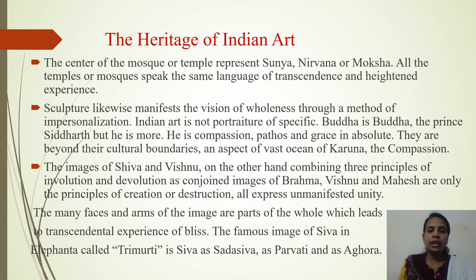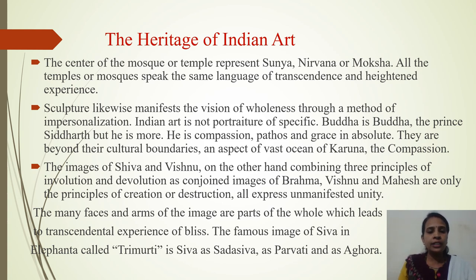The images of Shiva and Vishnu on the other hand, combining three principles of involution and devolution as conjoint images of Brahma, Vishnu and Mahesh. Toh Brahma, Vishnu and Mahesh, jisko hum Tri-murti ke naam se jante hain — 3 forms combined into one. Toh Brahma ko hum creator maante hain, Vishnu ko palankarta maante hain, Shiva the destroyer. All expresses unmanifested unity — lekin ye tino milakar phir se Ishwar ke ek hi hone ka bhaav pradarshit karte hain.